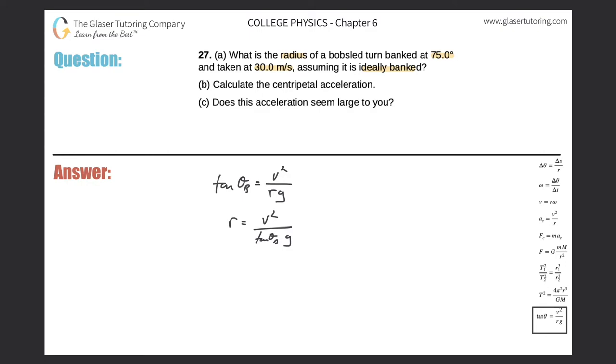So now all I need to know is the linear velocity and the angle, and we do know that. Here's the angle. Here's the linear velocity. So just plug it on in. So we've got 30 squared all over tangent of 75 multiplied by 9.8. And the radius of curvature or the radius of the turn, whatever you want to call it, is 30 squared divided by tan of 75 multiplied by 9.8. And it comes out to be 24.6.